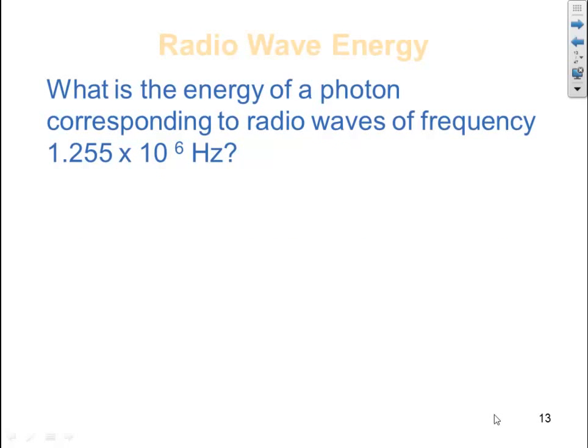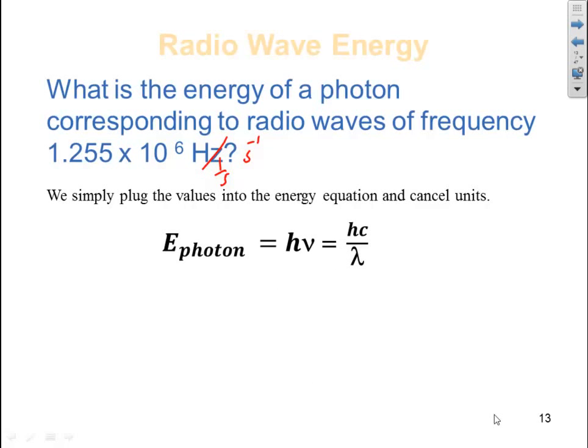Let's try a calculation using energy. What is the energy of a photon corresponding to radio waves of frequency 1.255 times 10 to the 6 hertz? Remember, hertz is basically saying seconds minus 1 or 1 over seconds. We simply plug the values into the energy equation and cancel units. Since I have frequency, just plug it into the middle term and multiply it by Planck's constant.